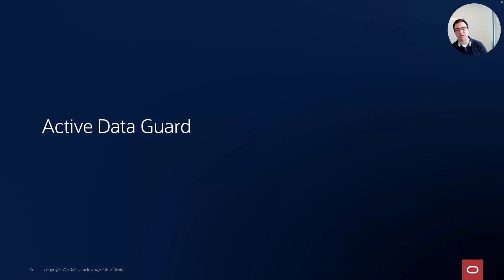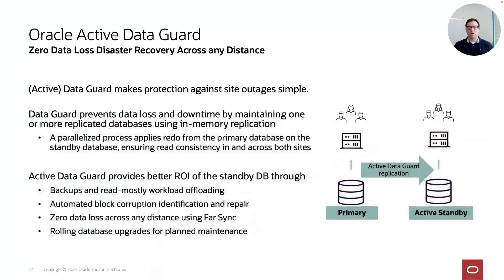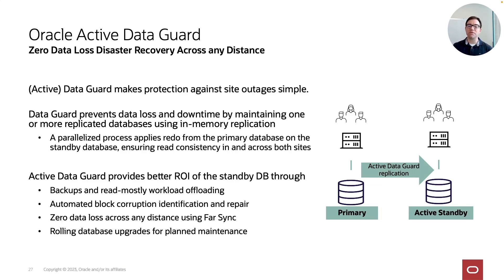As you can see, Transparent Application Continuity helps you hide database failures and outages — planned or unplanned — from your application. Another hidden gem I mentioned is Active Data Guard. Oracle Active Data Guard is a solution many of you will know, providing zero data loss disaster recovery across any distance. Like Application Continuity, it comes in two flavors: Data Guard, which is part of Oracle Database Enterprise Edition, and Active Data Guard, which is an option to the Enterprise Edition.